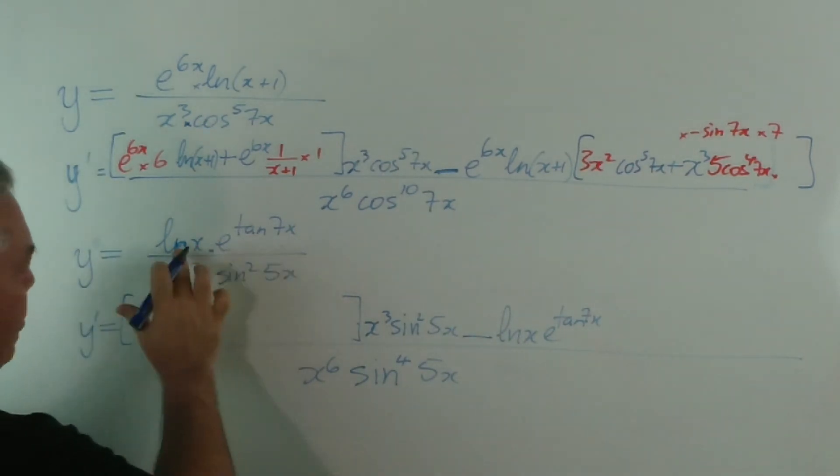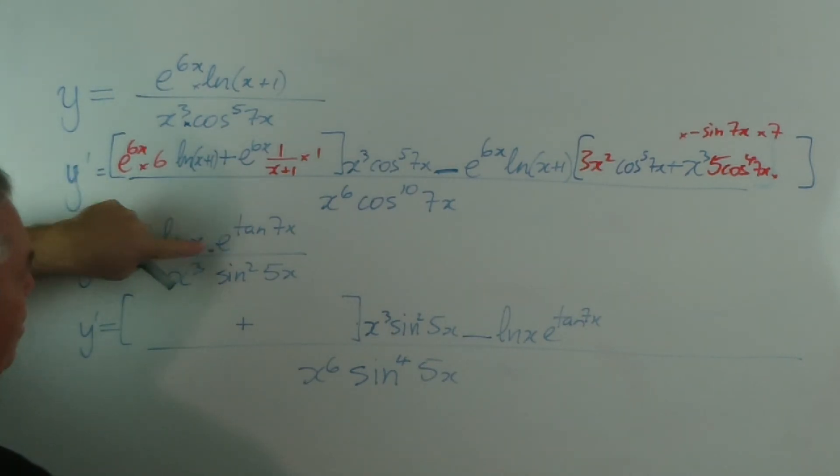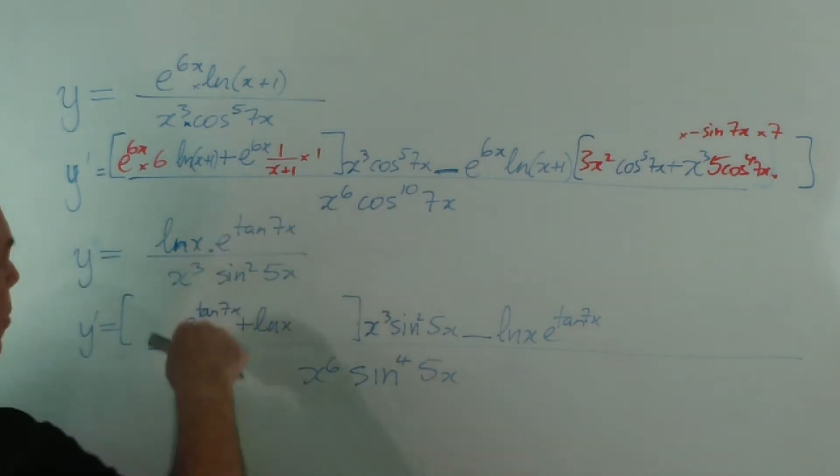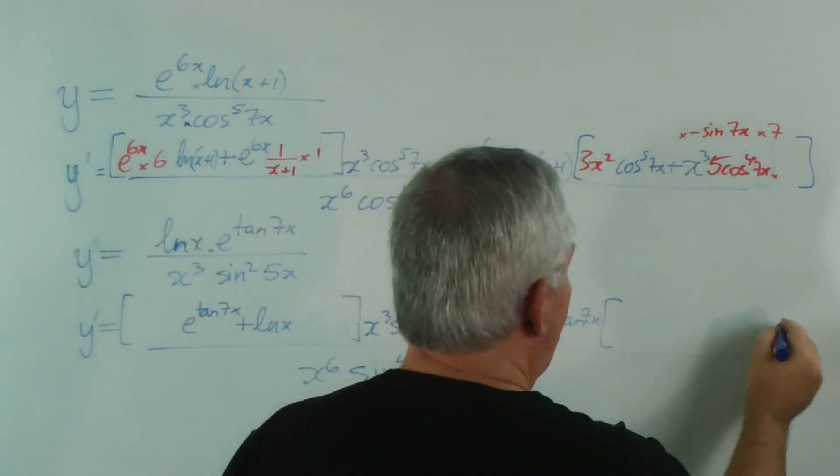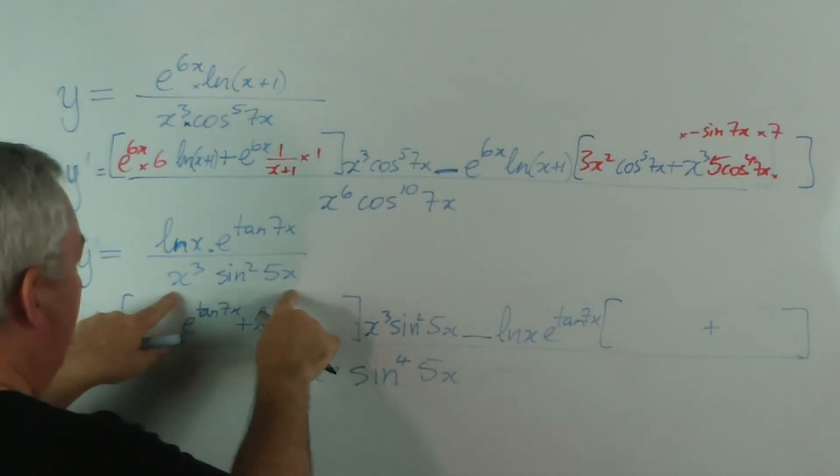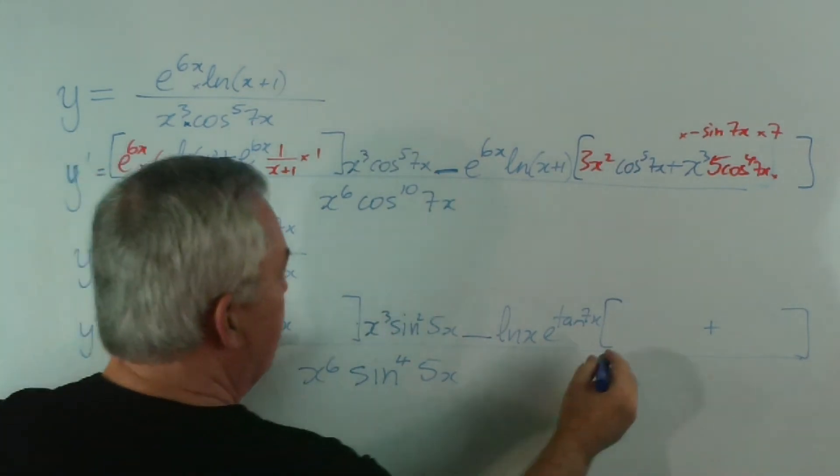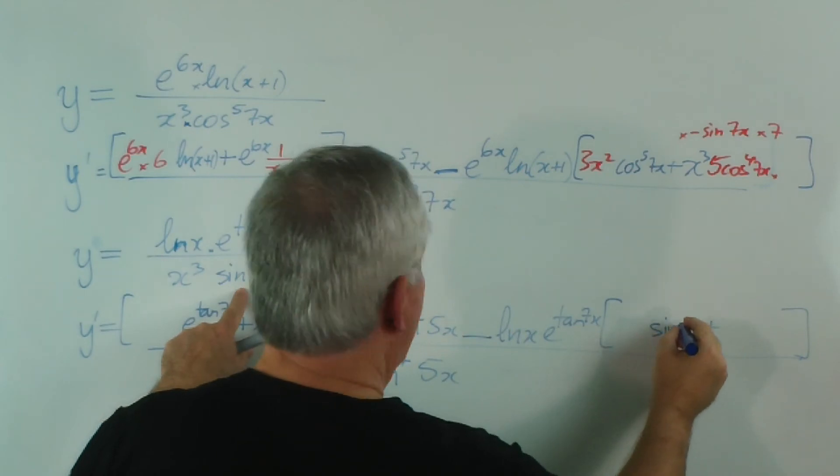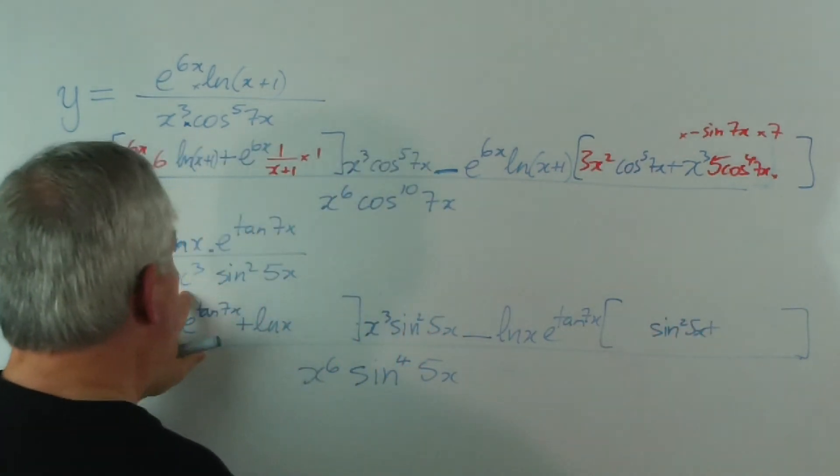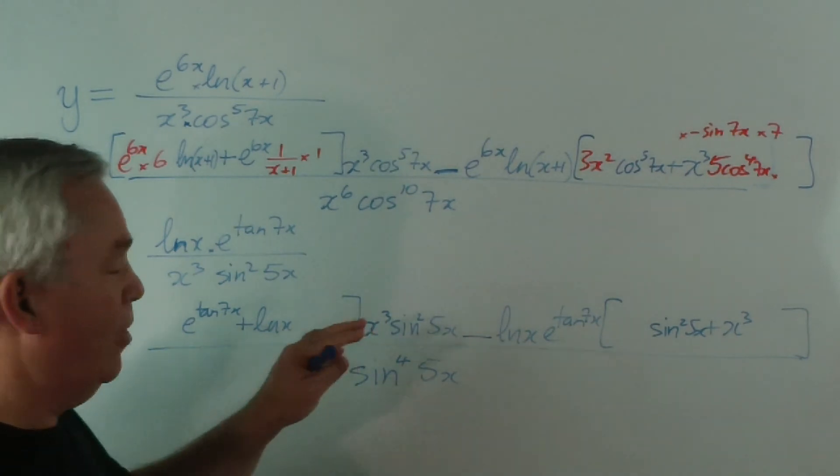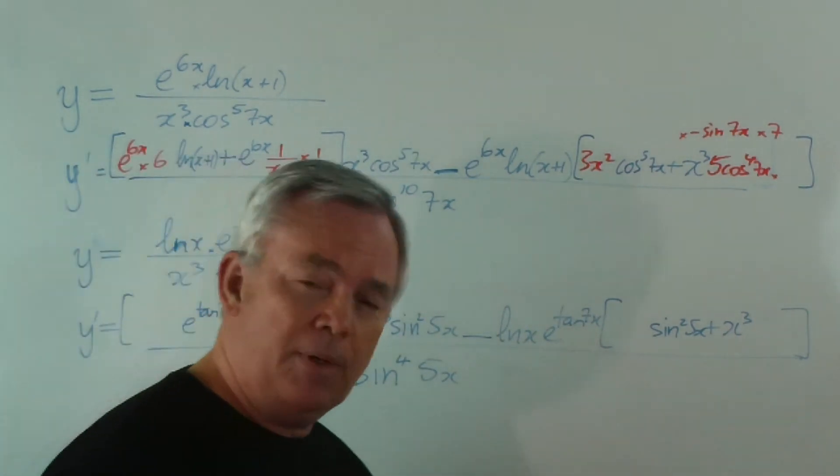Now, since we're finding the derivative of the product, we know we're going to have two expressions added. We're going to find the derivative of the logarithm times e^(tan7x), and then we're going to leave the logarithm alone and find the derivative of that. So, over here we're going to find another product because I have a product on the bottom. We'll find the derivative of x³ times the sin²(5x), and then we'll leave the x³ alone and find the derivative of sin²(5x). Now, I really don't have room to fit these in, so I'm going to stack them a little bit with my red ink.